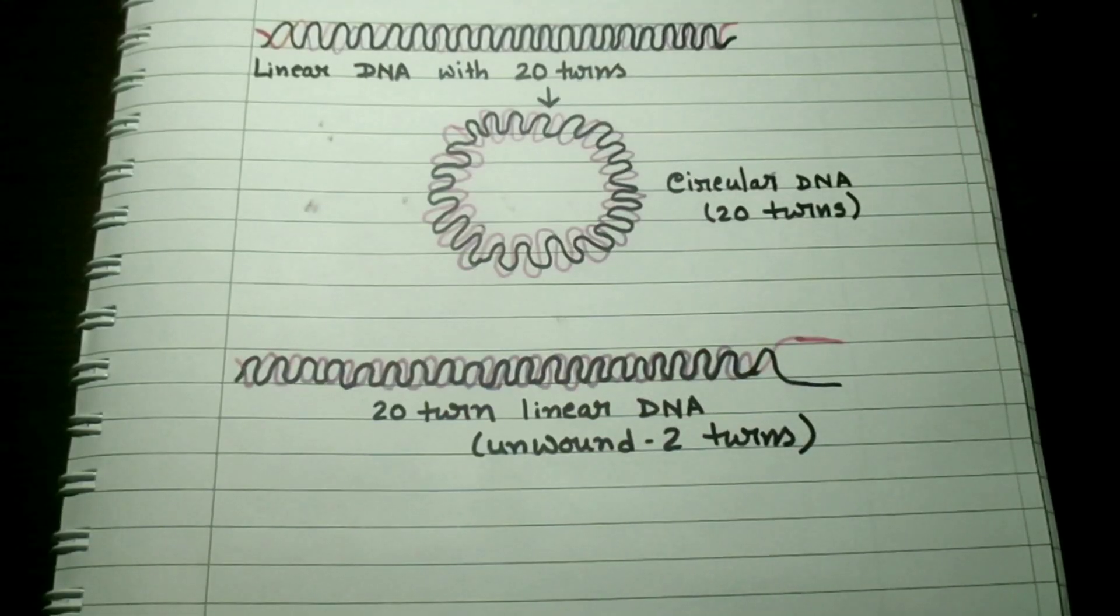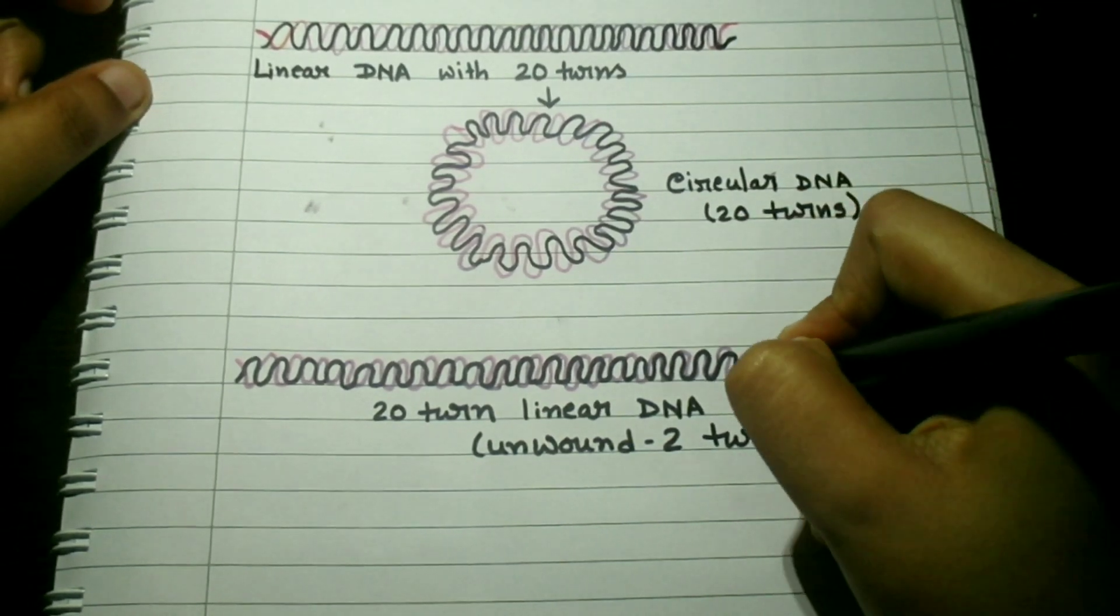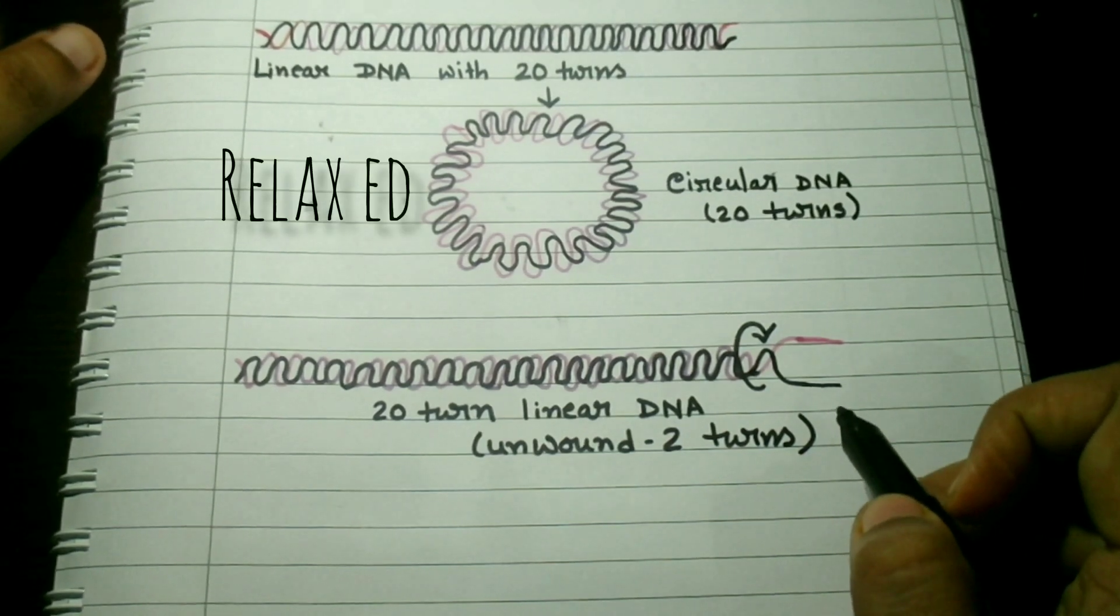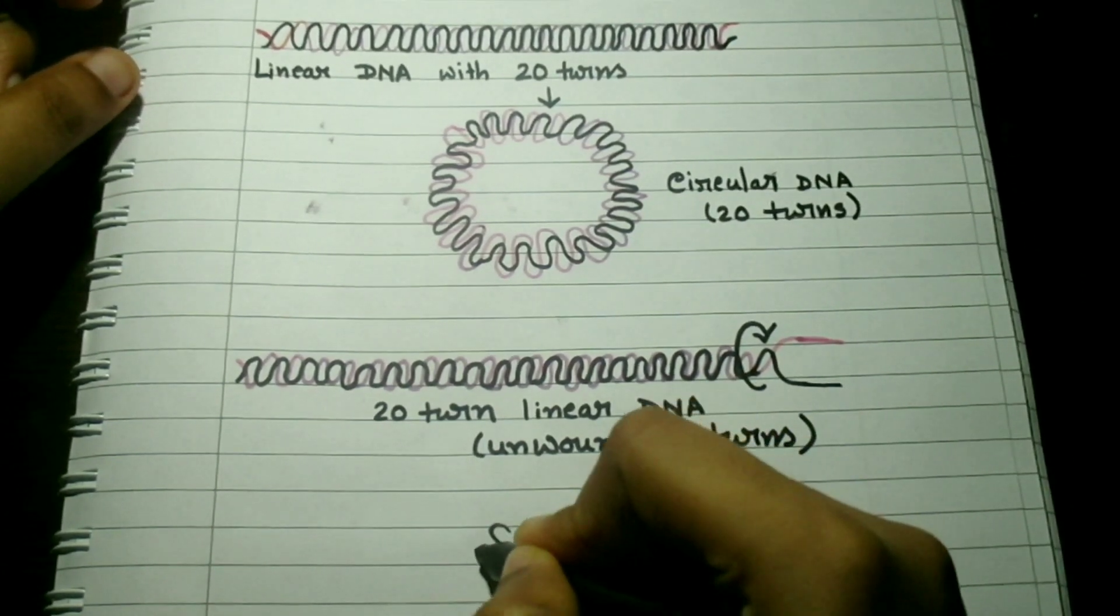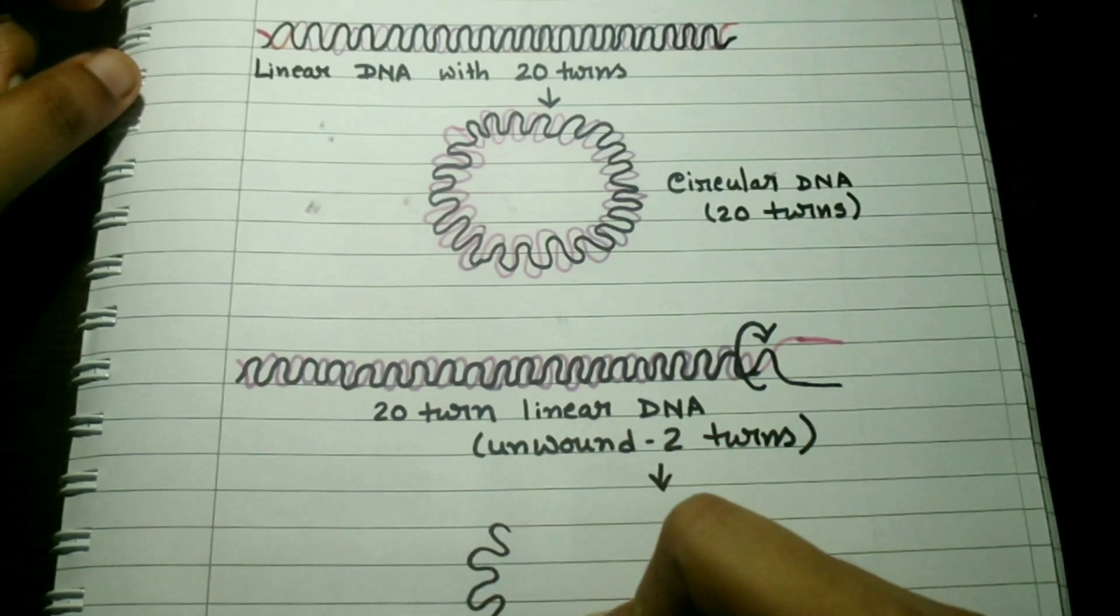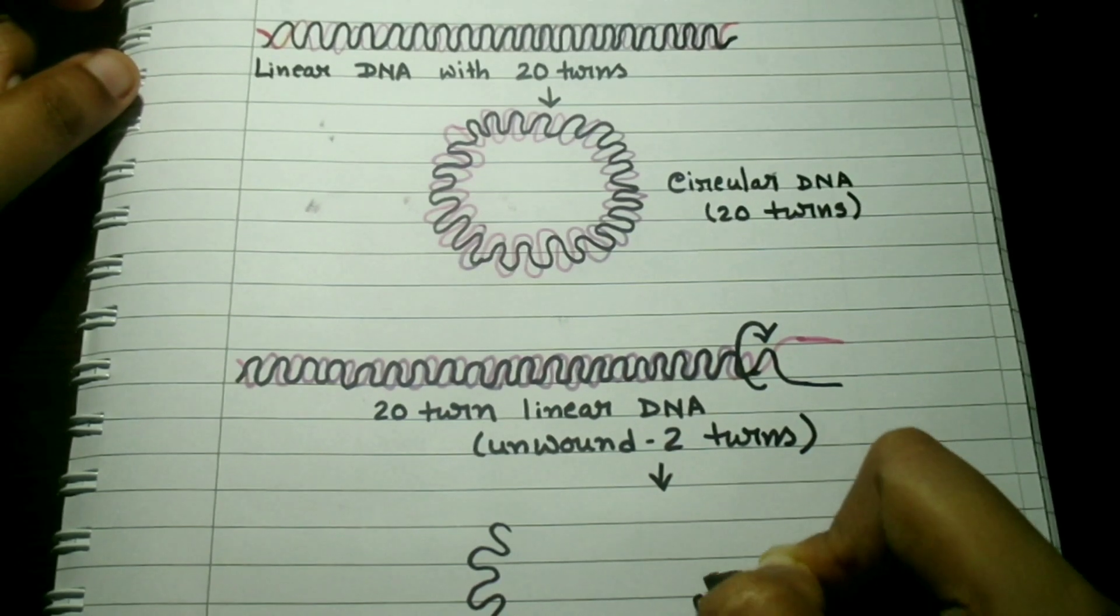If one end is constrained, separating the two strands at the other end will lead to twisting. When there is no bending of a DNA axis upon itself, the DNA is said to be in a relaxed state.